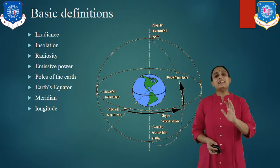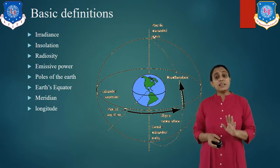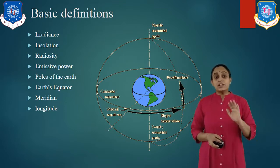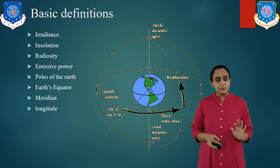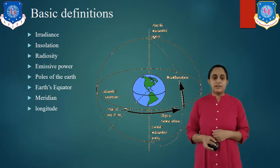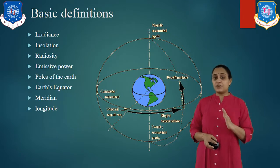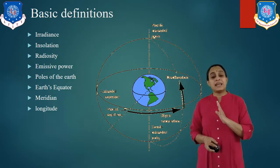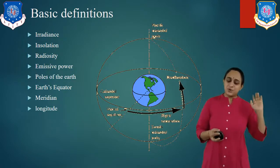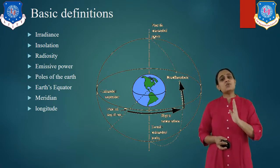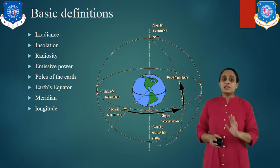It is necessary to select one reference location on the Earth for helping in locating particular positions. The location of the Royal Observatory, Greenwich, has been universally accepted as a reference point. An imaginary great circle passing through the meridian and two poles, intersecting the equatorial at right angle, is called the prime meridian. Longitude is the angular distance of a location measured east or west from the prime meridian.